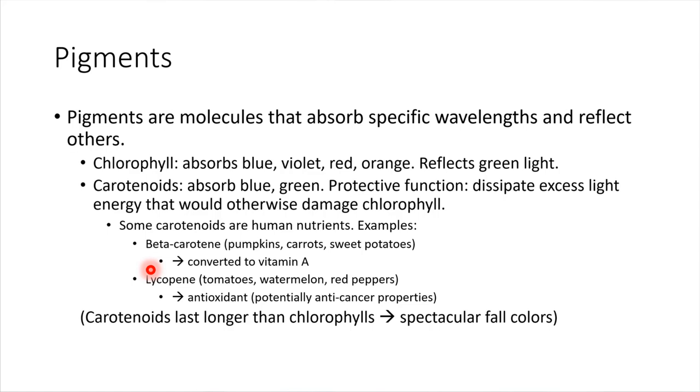Lycopene, this is something that we can obtain from eating tomatoes, watermelon, red peppers, things that are red in color. The pigment lycopene, in our bodies, it has anti-cancer properties. Once we eat it and our bodies process it, it acts as an antioxidant. So that's very important as well.